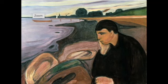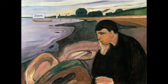Born in 1863, he grew up in the capital of Norway. When he was 5, his mother died of tuberculosis, a serious disease that affects the lungs. Several years later, his sister died of the same disease.